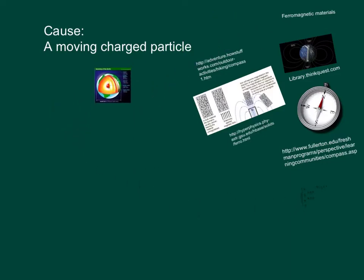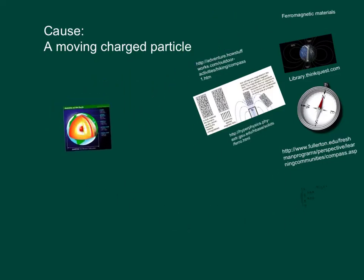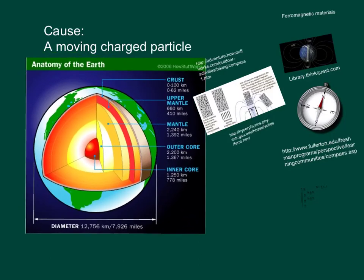What causes the earth to be magnetic? Our earth has an iron core — a solid inner core but a liquid outer core. That liquid outer core is moving around and causes the earth to have a magnetic field. That magnetic field affects some iron materials.